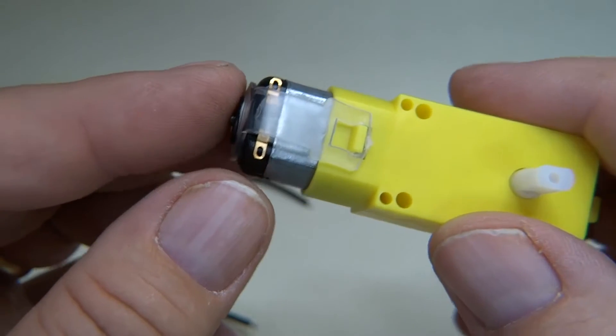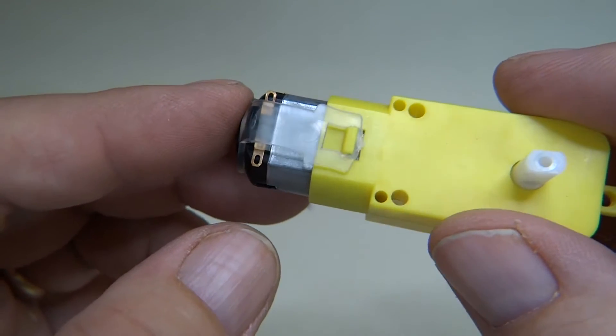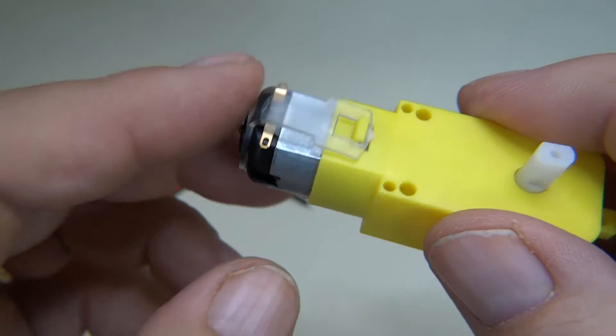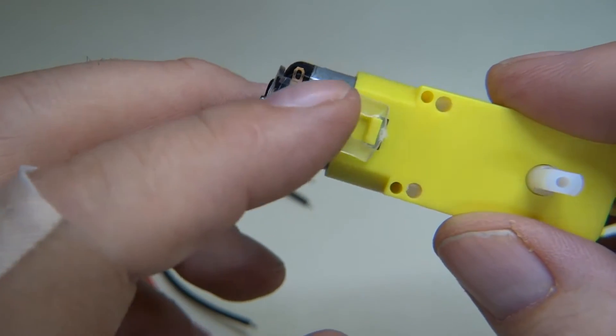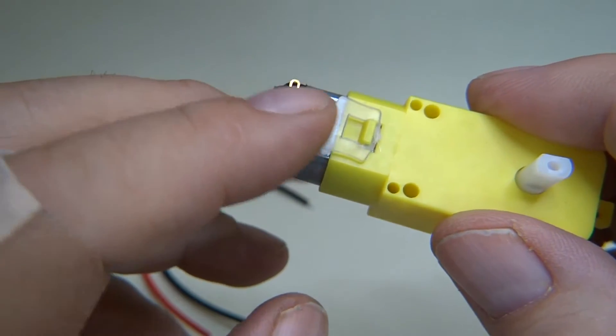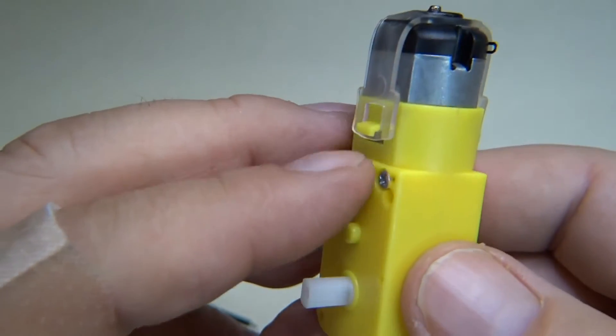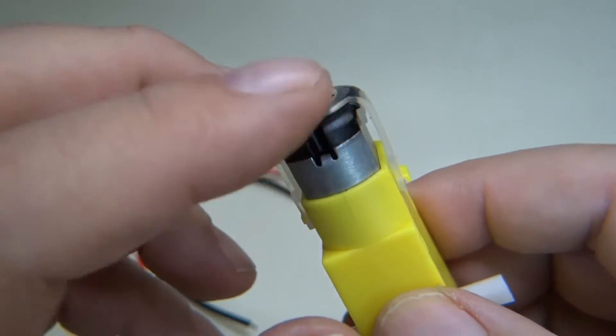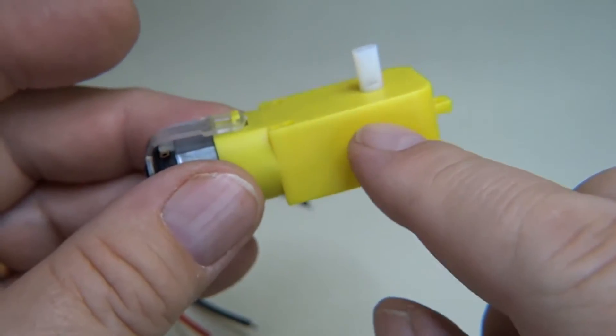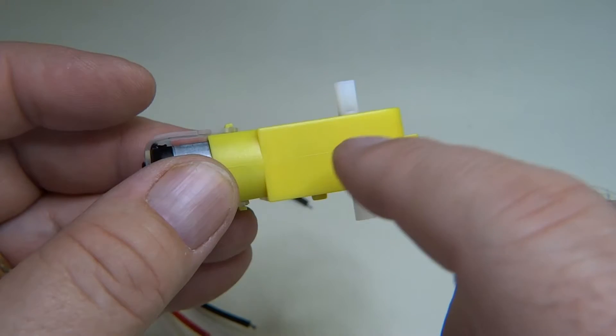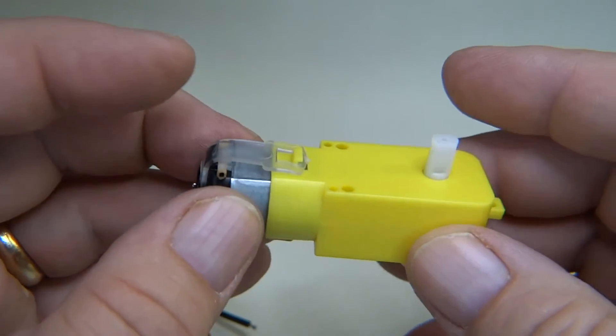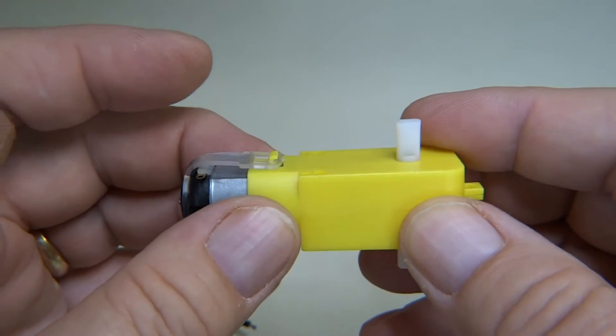So a couple of things to note about soldering on this motor. You have to be very careful not to melt this plastic clear plastic piece because it's holding the motor. So the motor shaft has a little gear on it.